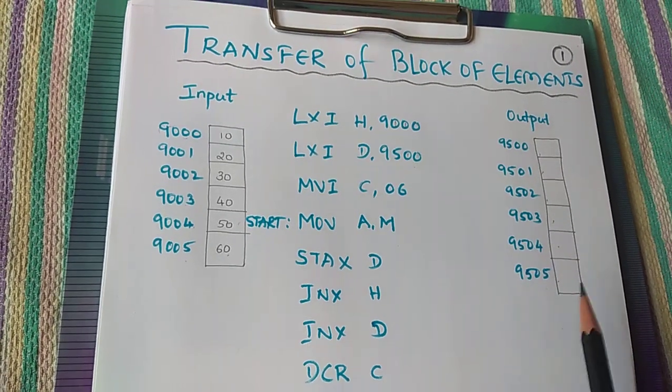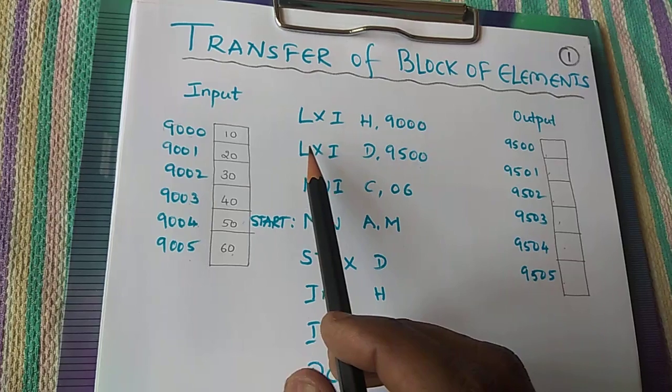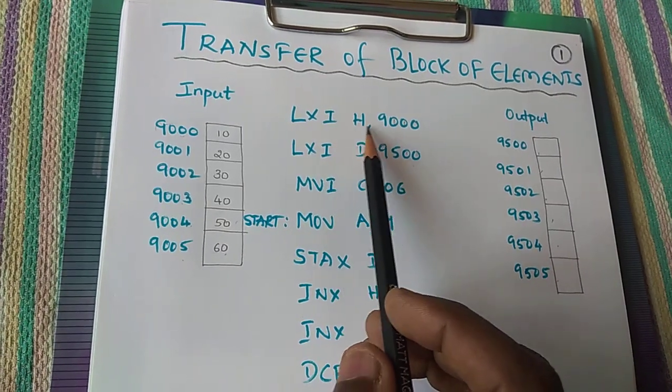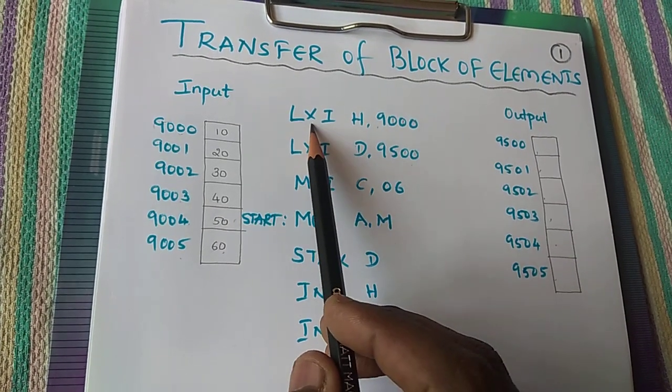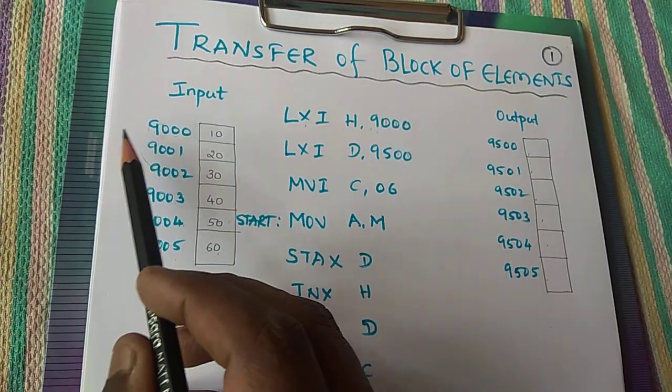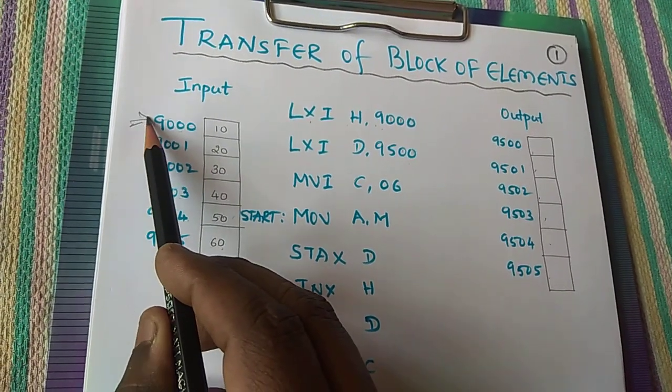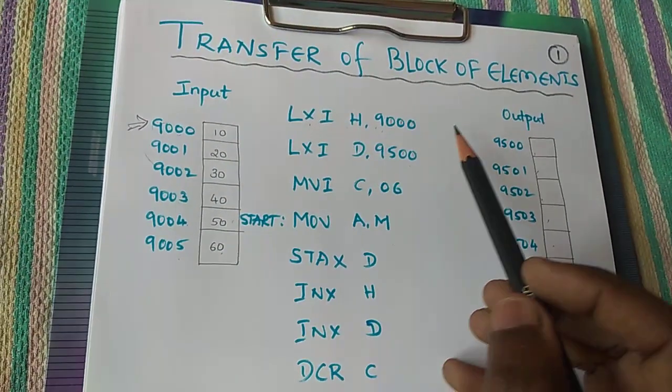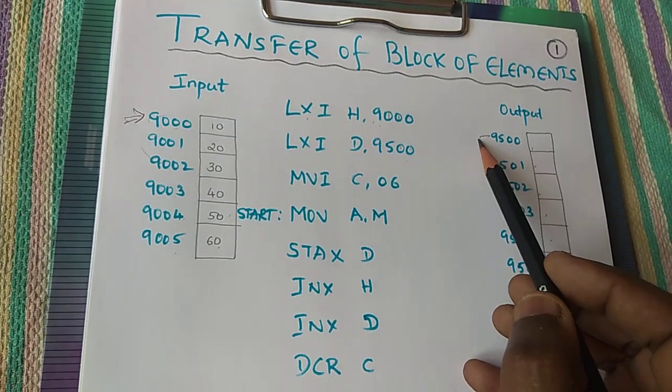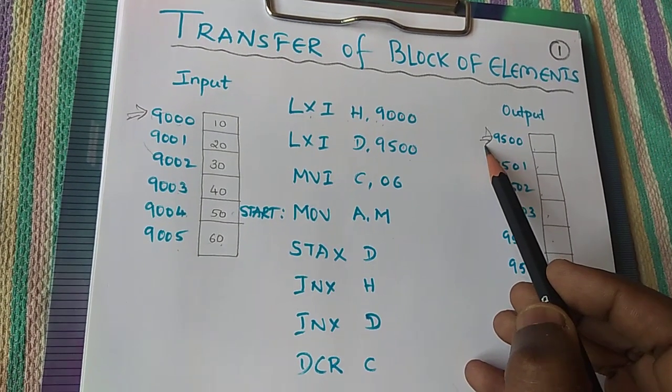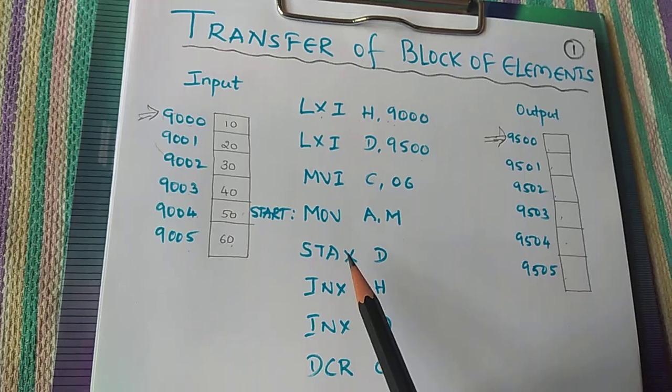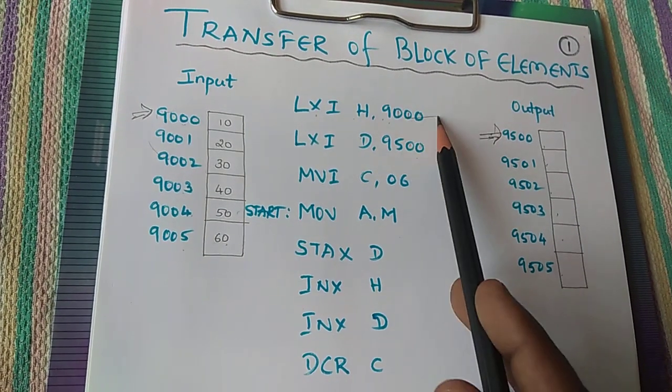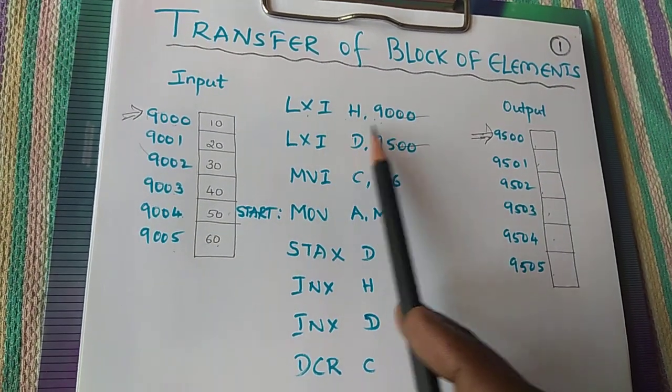So let us point the pointer to the two locations. So 9000, LXI H comma 9000 means a pointer will point to this location and LXI D comma 9500, pointer will point to this location. So these are the two locations we are pointing by using these two instructions called as LXI H comma 9000, LXI D comma 9500.